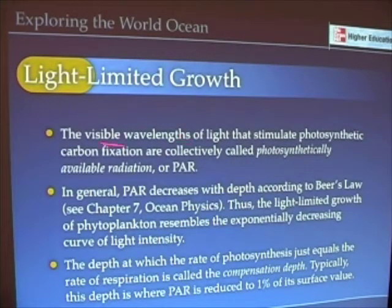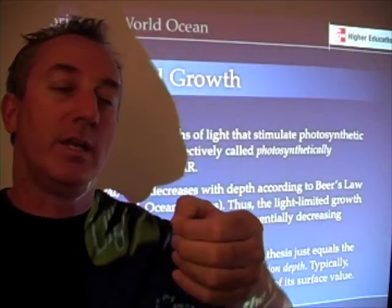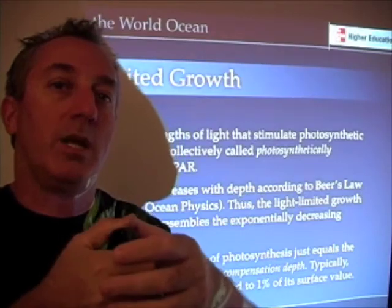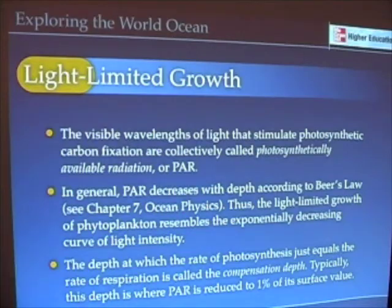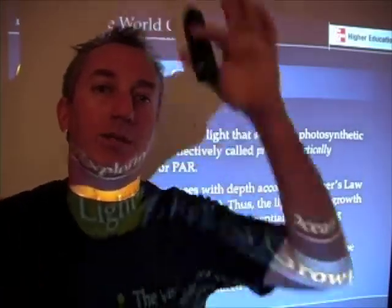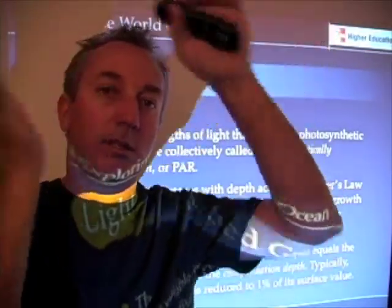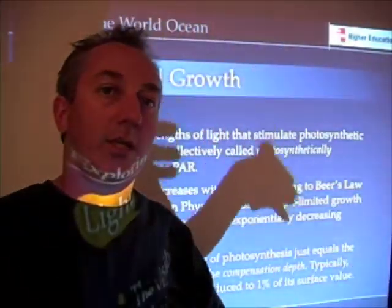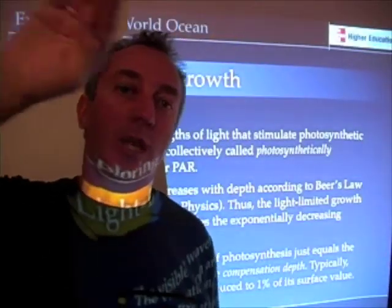Those wavelengths of light that stimulate photosynthesis are called photosynthetically available radiation, or PAR. The hockey puck sensor on top of the spectroradiometer is actually measuring PAR. Photosynthetically available radiation — visible light between 400 and 700 nanometers — decreases very quickly in the surface ocean, then less quickly as you go deeper, following what we call an exponential relationship.